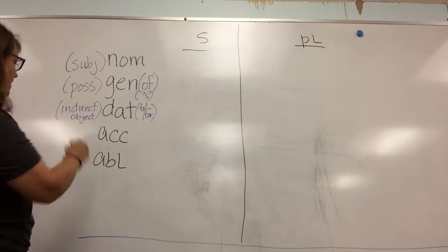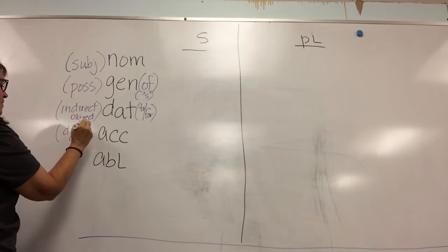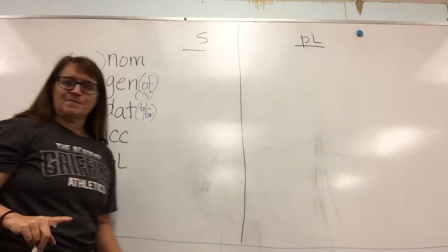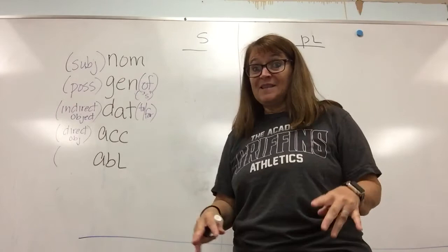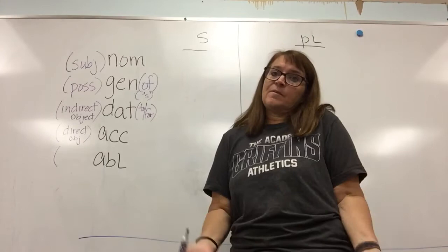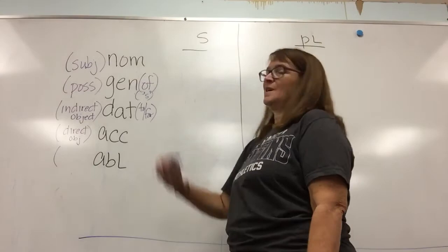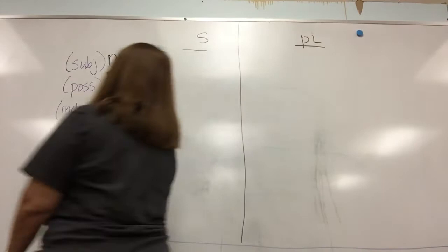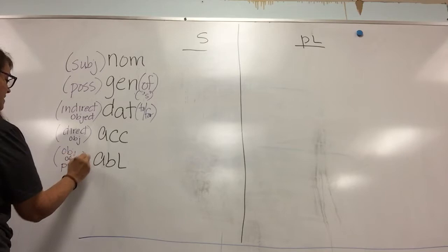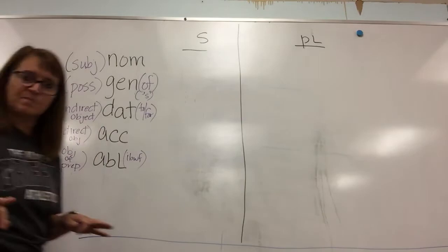The accusative case is our direct object case. We don't really use any special words with that. And the ablative — I love the ablative case because it is like a pot that we put lots and lots of things into as you go along in Latin. But at the beginning, we say it's the object of the preposition case. Also the accusative can be the object of the preposition, but just to help ourselves, we say object of the preposition for the ablative case. And sometimes we say it's the in, by, with, from case.